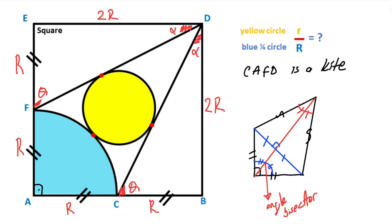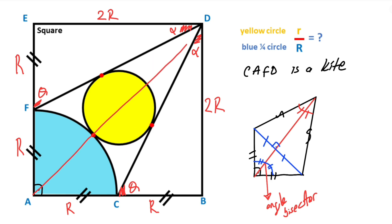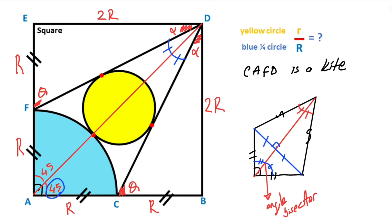Let's return to the question. If you focus on kite CAFD and draw the diagonal of the kite, this red line is the angle bisector, so these two angles are equal to each other, and these two angles as well. We know the diagonal of the square is also an angle bisector line, which means the diagonal of the kite and the diagonal of the square overlap with each other. Diagonals intersect at 90 degrees and these two parts are equal.